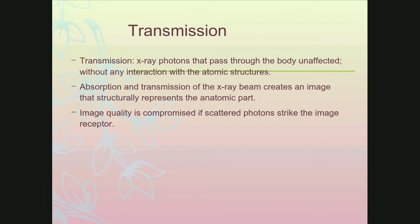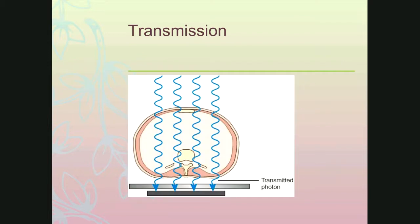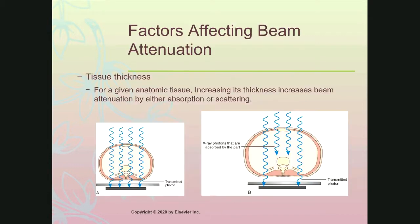If scattered photons strike your IR, it compromises quality — it obscures the anatomy and adds unwanted shades of gray to your image. With transmission, there's no change in wavelength, no change in frequency, and that photon comes straight through the patient directly interacting with the image receptor. We do require some of those transmitted photons; otherwise we would have no dark shades on our image.